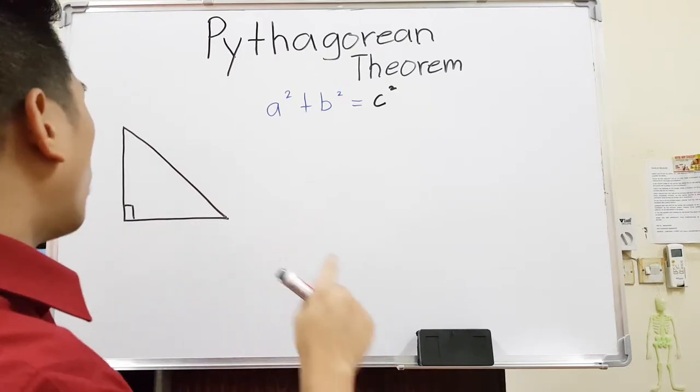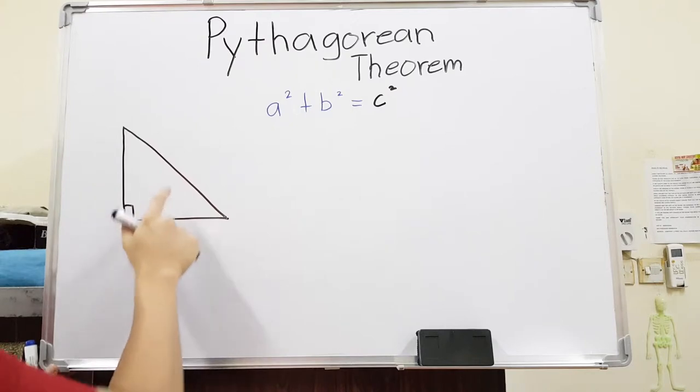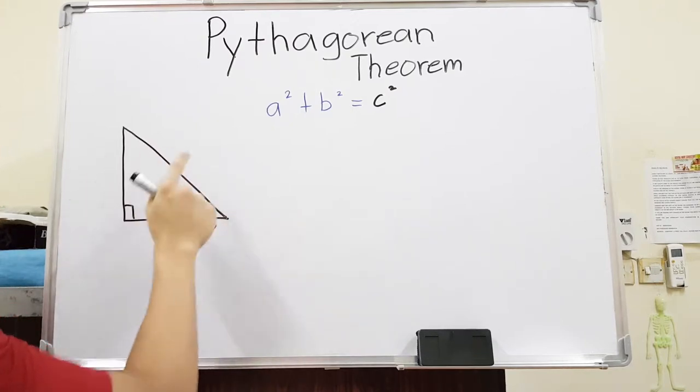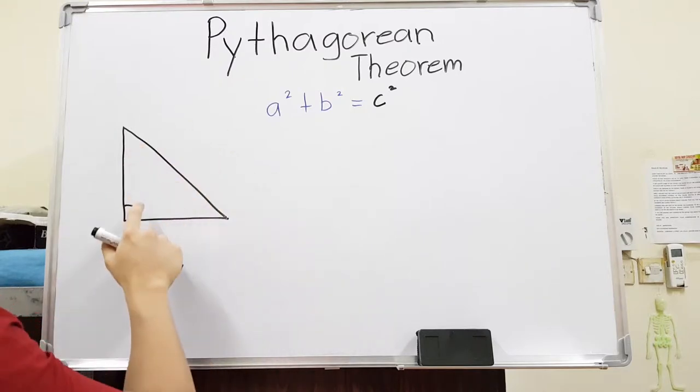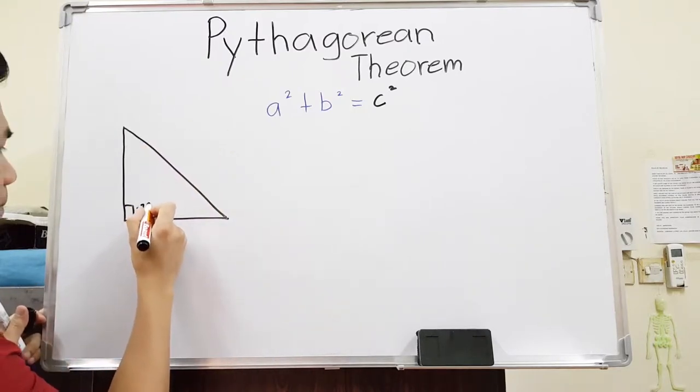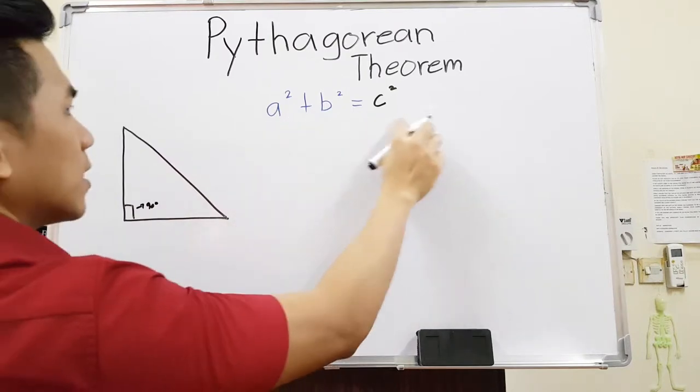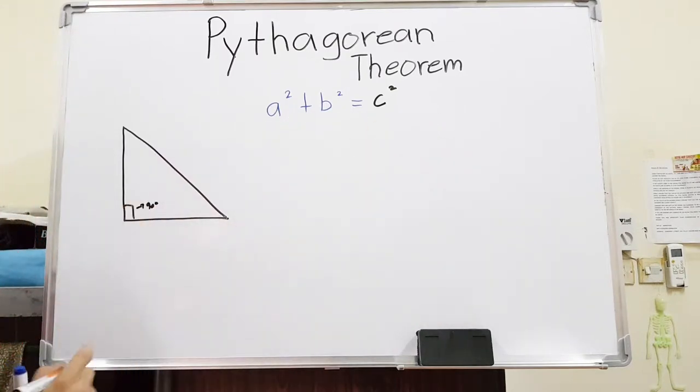This is a way to find one missing side—it could be this side, that side, or that side, any of those, as long as the other two sides are given and we have a right angle here. This is a very important part because we can't use this formula if we don't have a right angle.